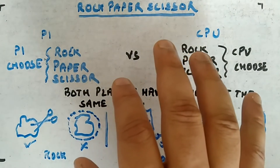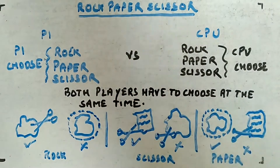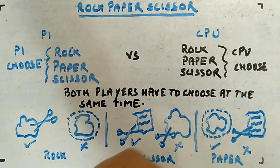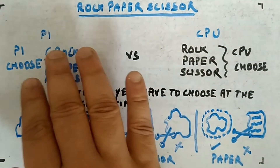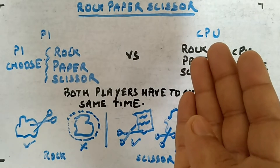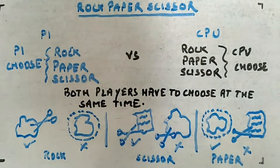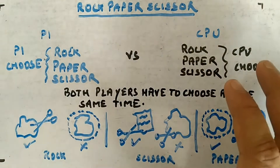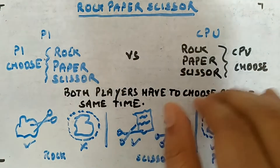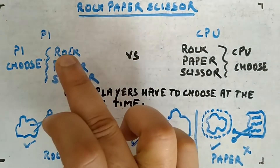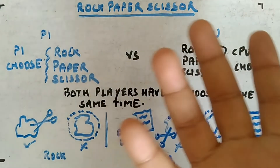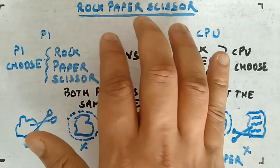This game is played between two persons - player one, that is us, and another is the CPU, the computer. You can have another player with you, but here we are working alone, so I'm taking the computer as the other player.